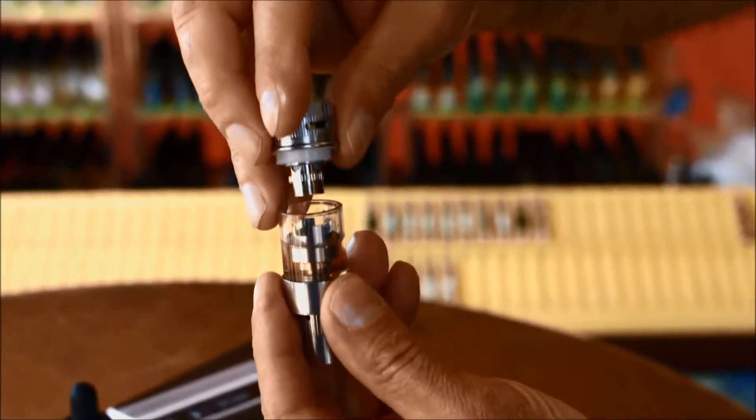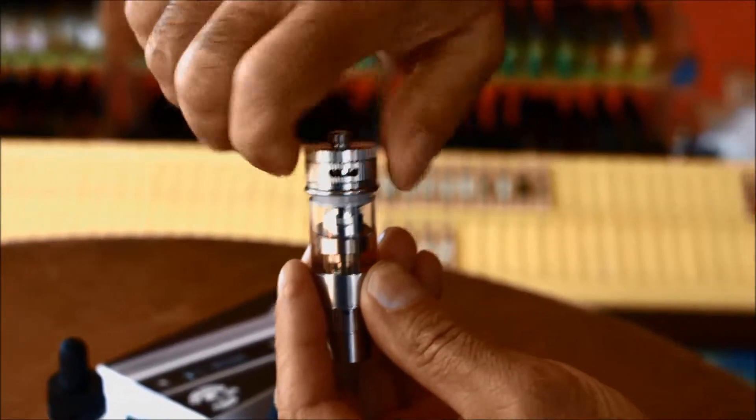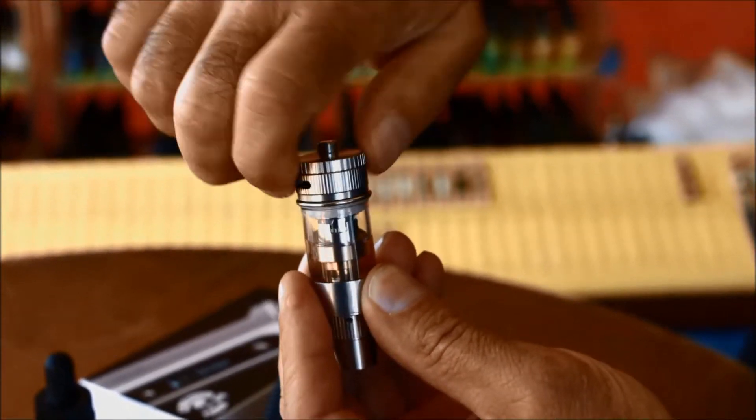Keeping the tank upside down, just align the atomizer with the metal stem inside the tank, and then slowly tighten it back down. Once it's tightened down, you're good to go.